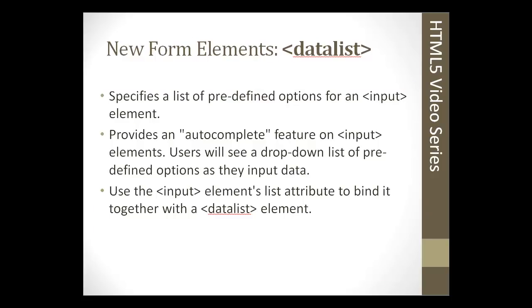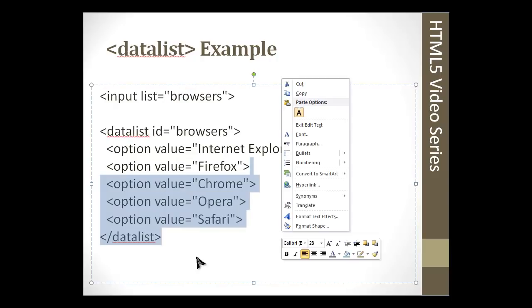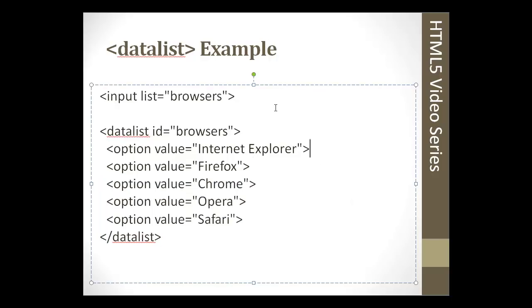It's a little hard to explain, but I'm going to show you in the programming part of this section how this works. Actually, I can show you right here. This is an example. We'd have an input list, we use the list attribute of browsers, and then we'd have a datalist with the ID of browsers, and then we'd have our options. So if in this text someone types F-I-R, then Firefox will actually pop up. It's just an autocomplete, used for simplicity and to make things easier for the user.